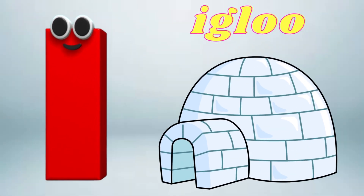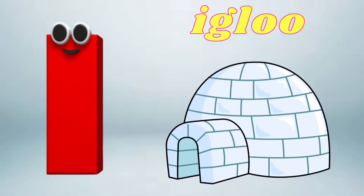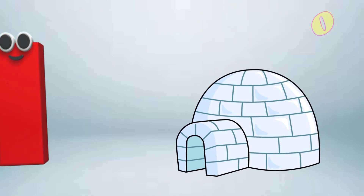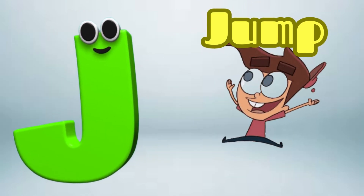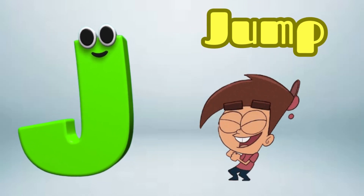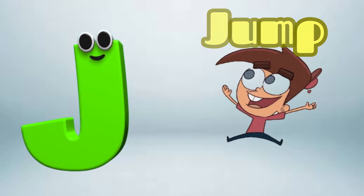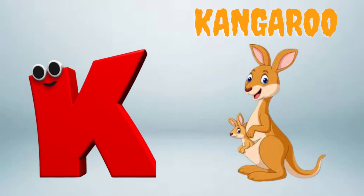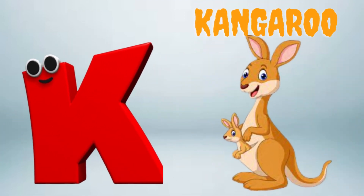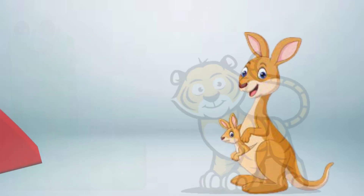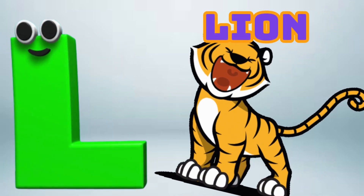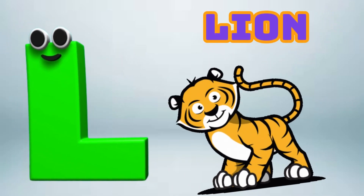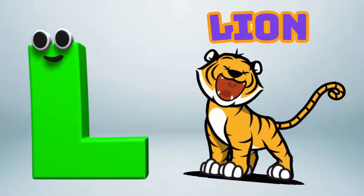I is for Igloo, I-I-Igloo. J is for Jump, J-J-Jump. K is for Kangaroo, K-K-Kangaroo. L is for Lion, L-L-Lion.